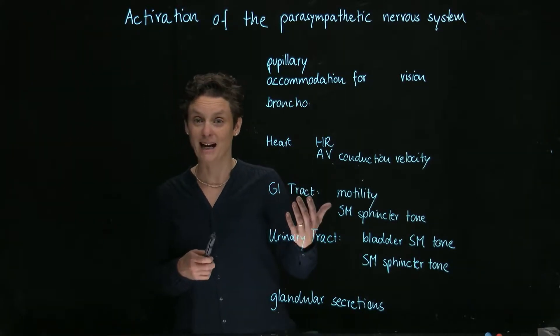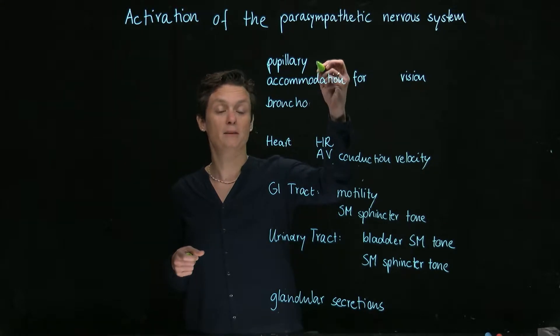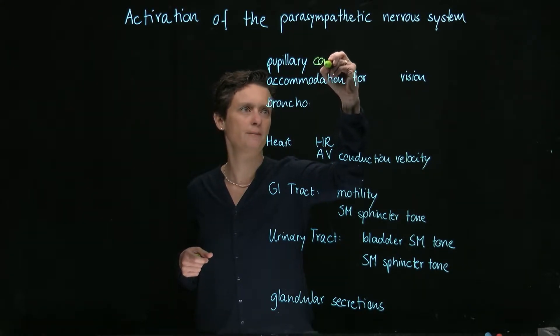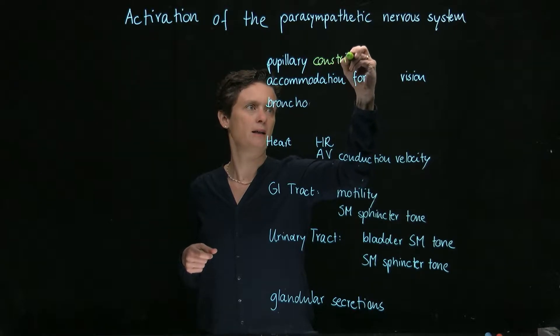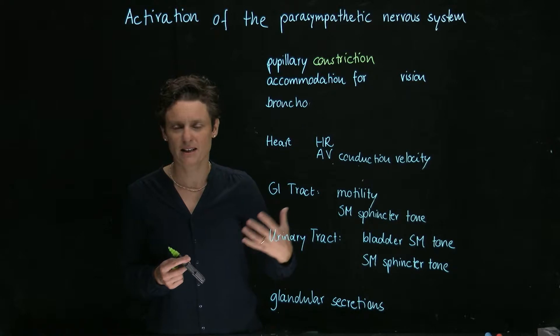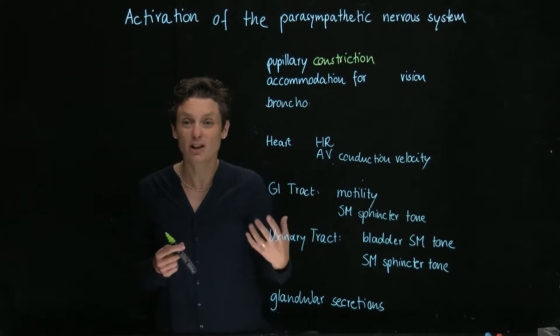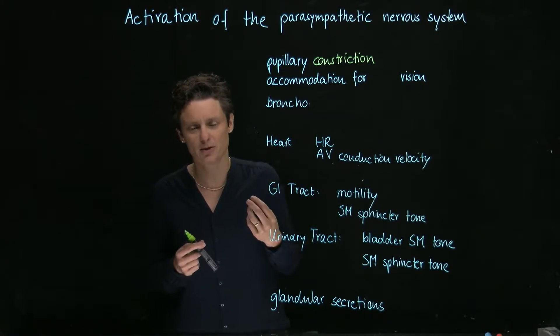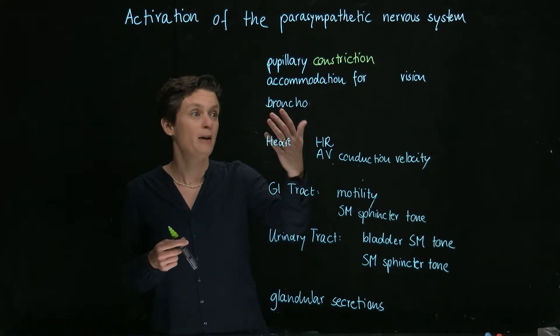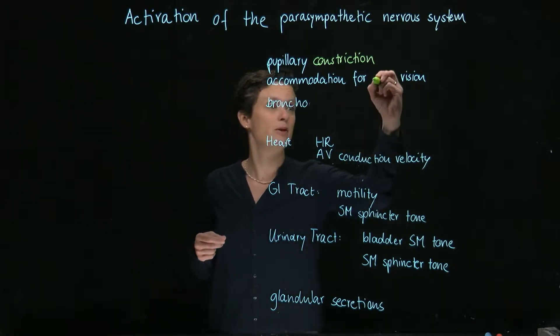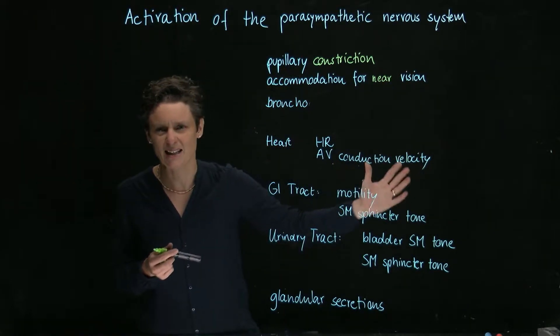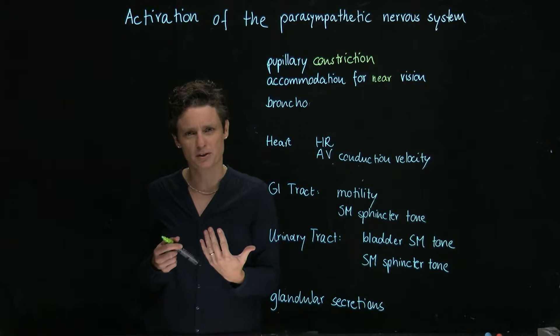Let's start with the eyes. Our pupils are constricted. We're going to get pupillary constriction because there is no need when we are under rest and digest to collect extra light. The pupils can be constricted. We're going to now have time to read a book. We're going to accommodate for near vision, not for far vision. We don't care if somebody enters the room. We're just going to be focused on our book now.